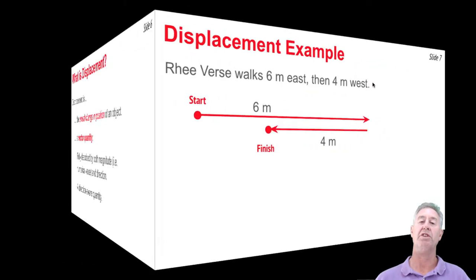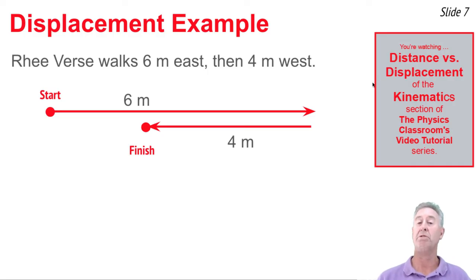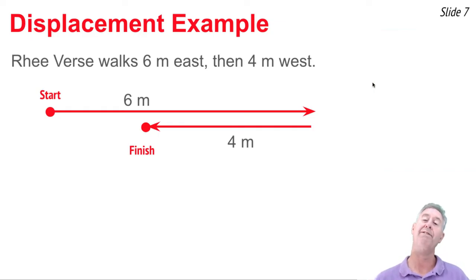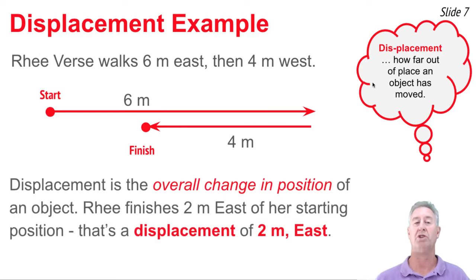Let's look at that same motion — Rhi walks six meters east and four meters west — and now let's ask: what's the displacement? We need to find the overall change in position, or how far the finish position is from the starting position. Taking six meters to the right and four meters to the left, we notice that the finish position is two meters to the east of the starting position. The overall change in position is two meters to the east — that's the displacement.